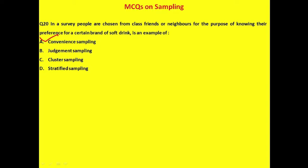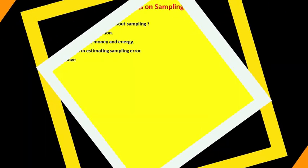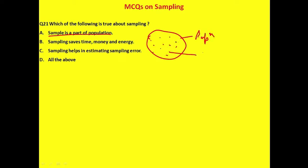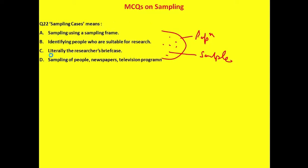Question 21: Which of the following is true about sampling? A — a sample is a part of a population; B — sampling saves time, money, and energy; C — sampling helps in estimating sampling error. All three statements are true, so the correct answer is option D: all of the above.